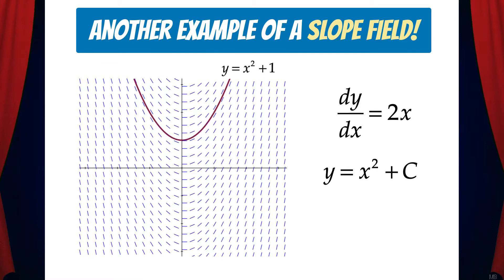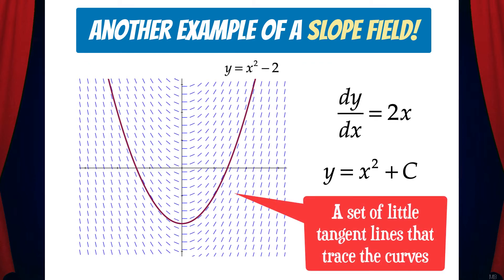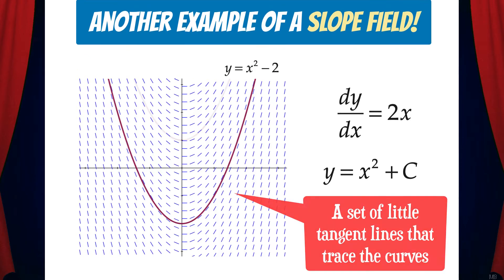Here, I've shown the particular solution, y equals x squared plus 1. And here's y equals x squared minus 2. With each of these solution curves, you can see that the slope field is a set of little tangent lines that trace the curves.